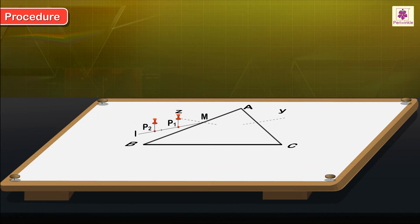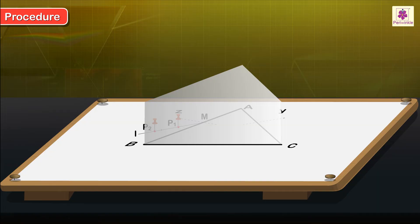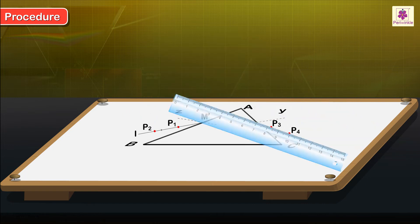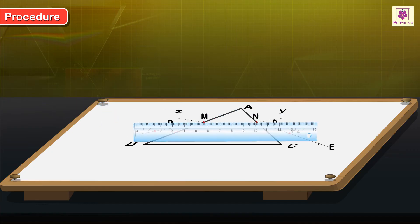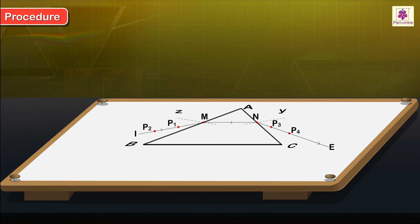Pierce two pins at points P1 and P2. Place the prism on its outline. Observe the image of the pins from the opposite side of the prism and place two pins at points P3 and P4 such that pins P1, P2, P3, and P4 appear in a straight line. Remove the prism and the pins and draw line P3P4. This is the emergent ray. Draw ray MN — this is the path of the ray of light through the glass prism, that is, the refracted ray.